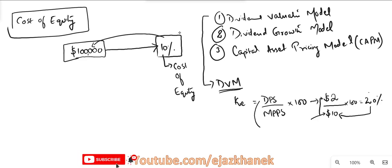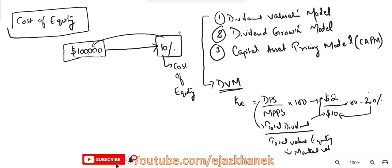You can also use the total dividend figure instead of dividend per share. But make sure that if you are using the total dividend figure, you must divide it by the total value of equity, and it should be the market value of equity, not the book value. Market value of equity is calculated by simply multiplying market price per share by the total number of ordinary shares. It depends on what type of information is provided in the question, but usually it will be the per share dividend versus the per share market price.